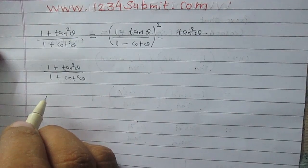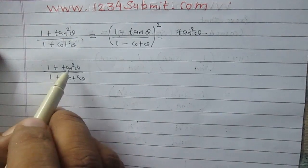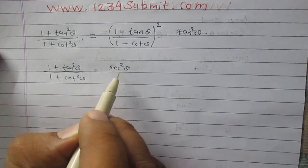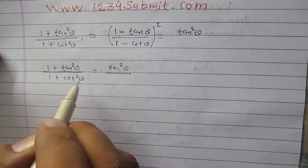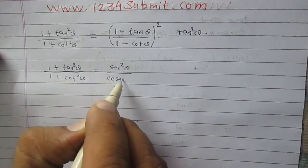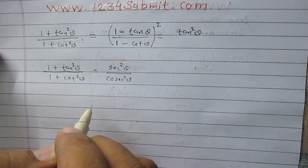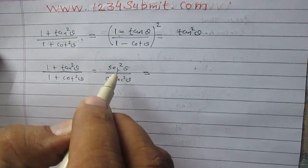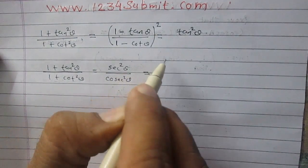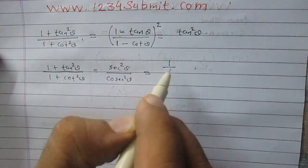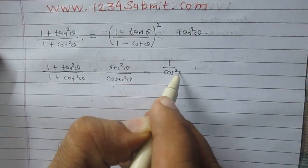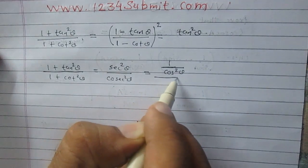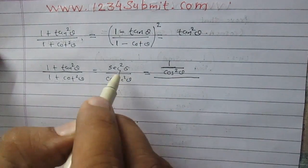It is very simple — just by using identities. We know that 1 + tan²θ is nothing but sec²θ, and 1 + cot²θ is cosec²θ. Further, we know that sec²θ is 1 / cos²θ, because secθ and cosθ are reciprocal of each other, so sec²θ = 1 / cos²θ.